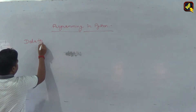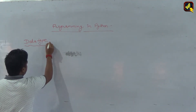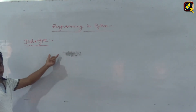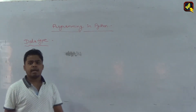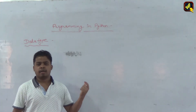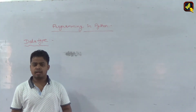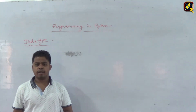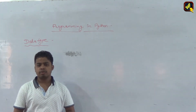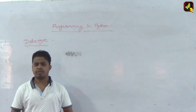What is data type? Data type basically indicates what kind of data can be stored in a variable. In the last video, we had seen what is variable.